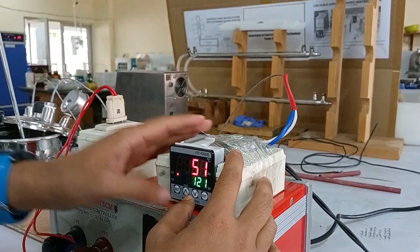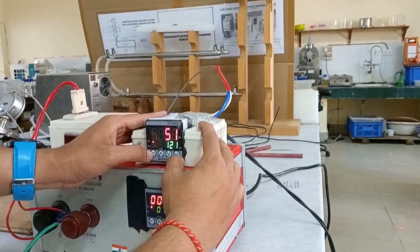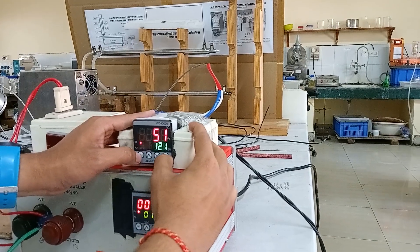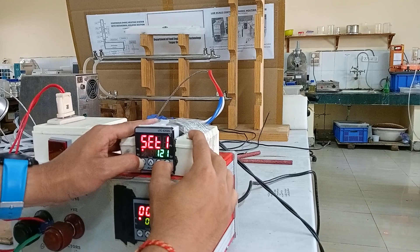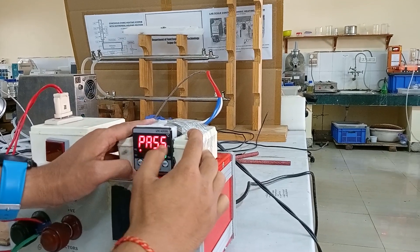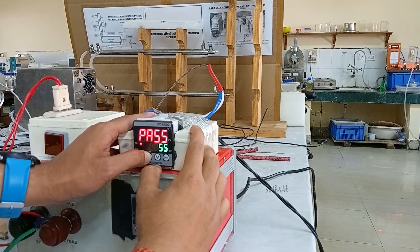To change the setting of this PID controller, press the set and enter buttons at the same time. A password will be requested, and the password is 73.